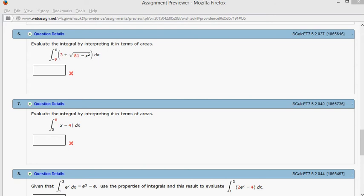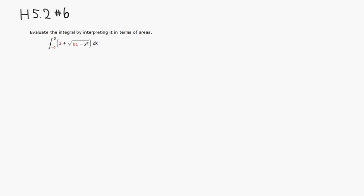First thing I would do is split this guy into two definite integrals. So it's negative 9 to 0, 3 dx, and integral from negative 9 to 0, square root of—I'm going to write it as 9 squared minus x squared dx.